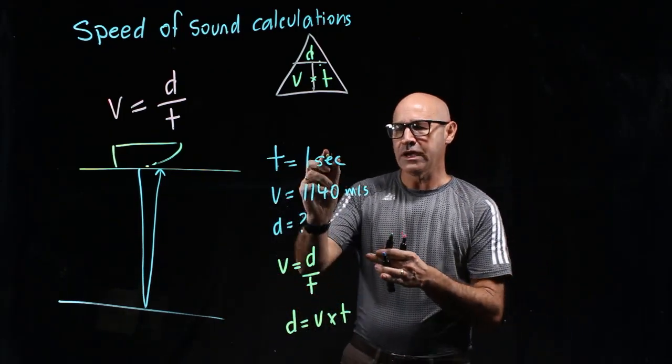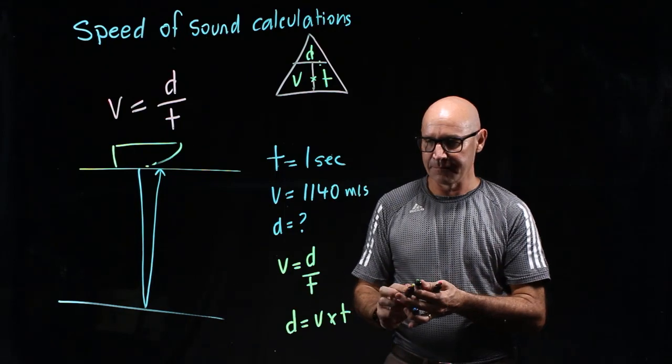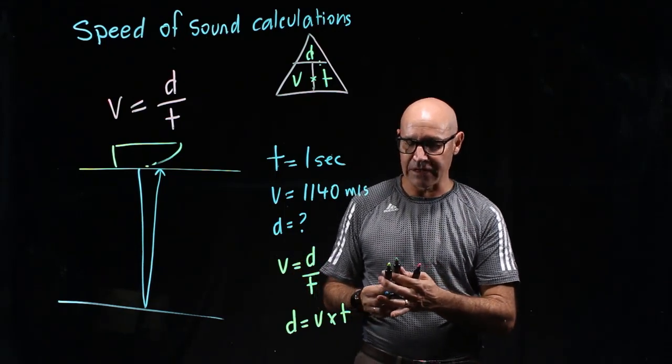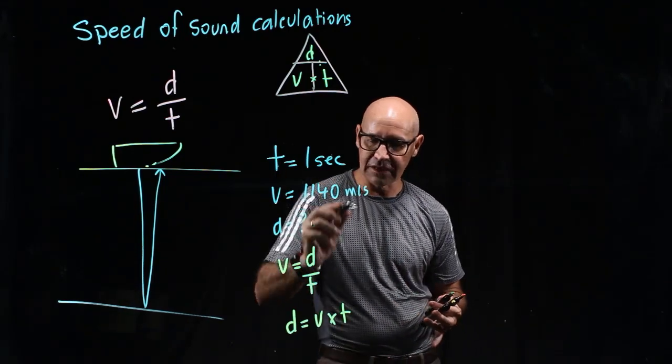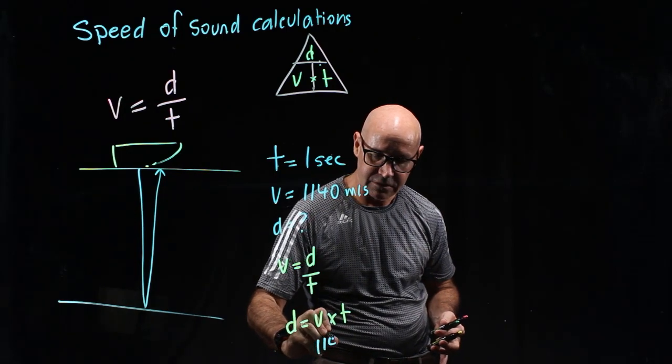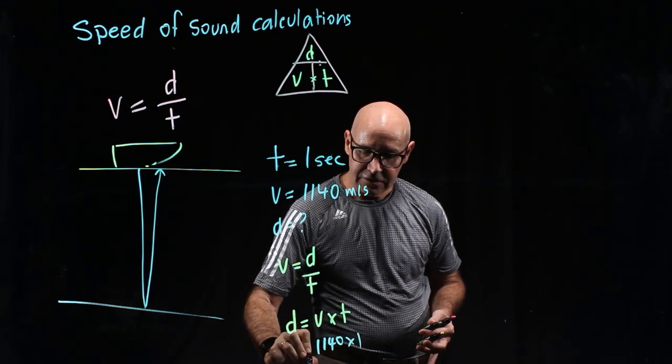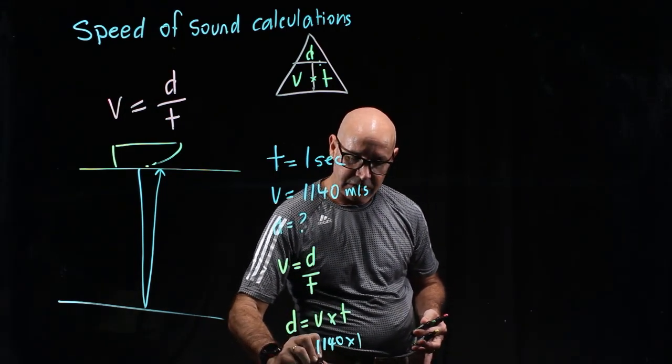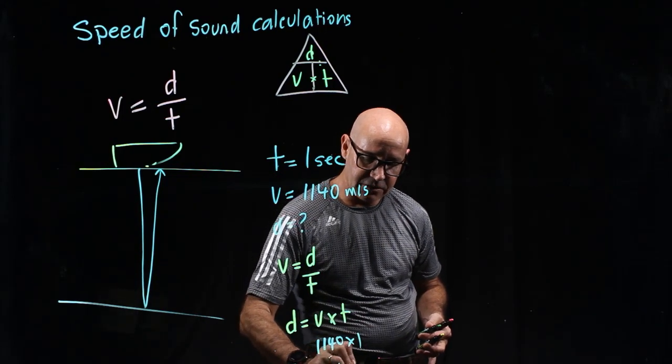Now we need to substitute in here for our values and it's an easy one, it's 1140 times 1. So our distance is 1140 meters.